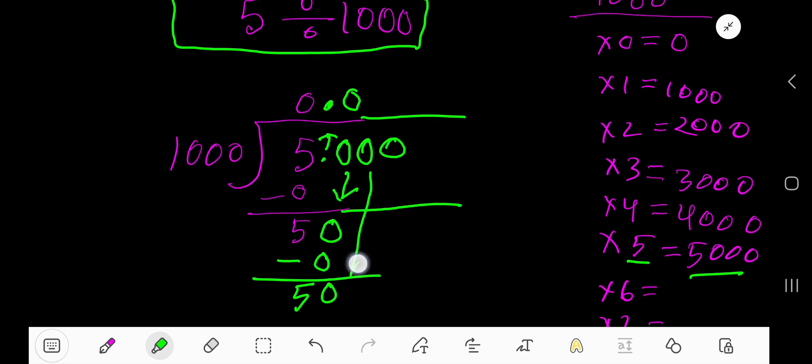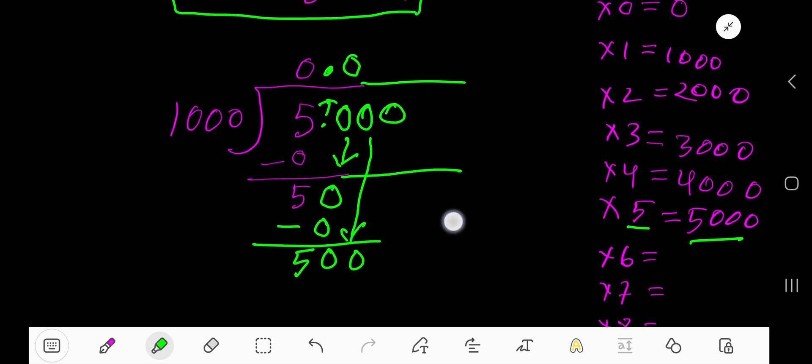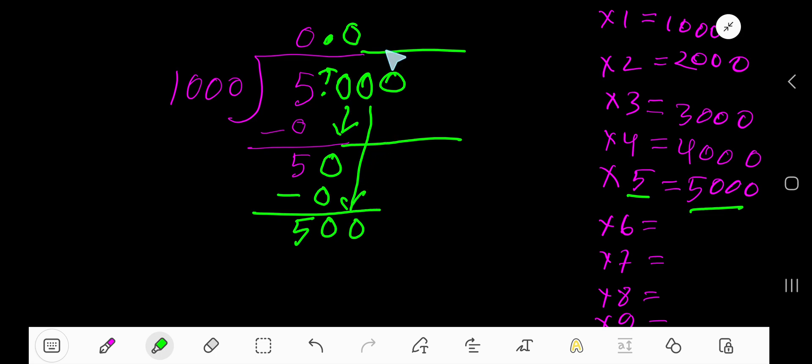Bring down this 0. 1,000 goes into 500 how many times? 0 times, because 500 is less than 1,000. 0 times 1,000 equals 0. If you subtract, you get the same number. Bring down this 0. Now you have 5,000.